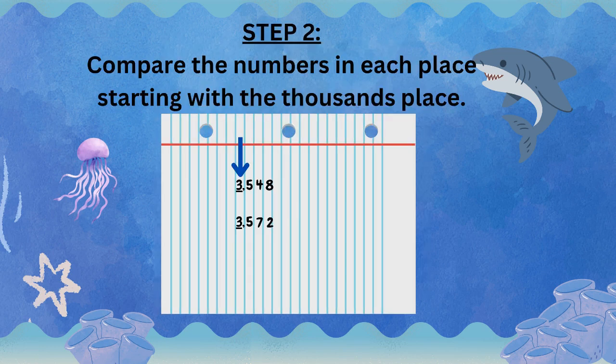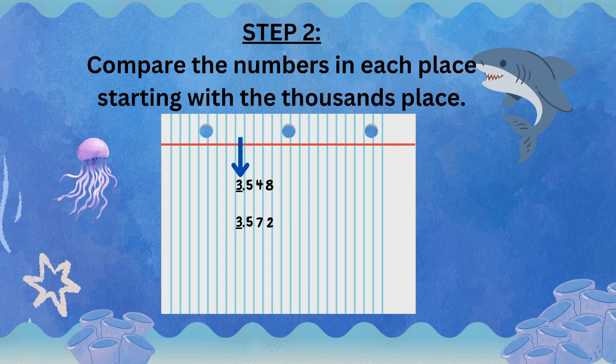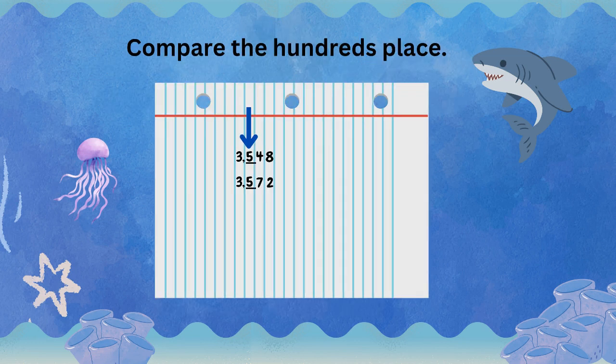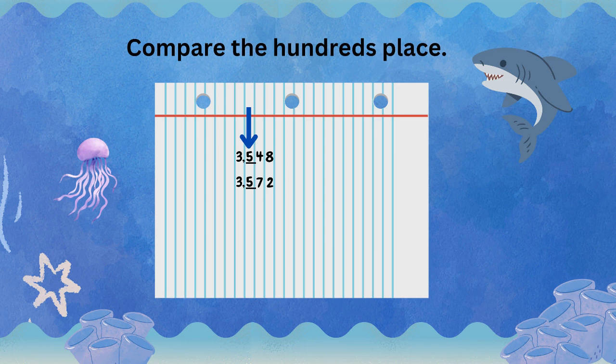Step two, compare the numbers in each place. This time we're going to start with the thousands place because we're dealing with a four-digit number. Notice how both of the numbers have a three in the thousands place. So we have to keep going. Next, we're going to look at the hundreds place. Notice how they're both fives. So we have to move on to the next place value.